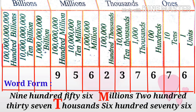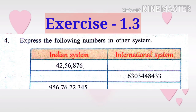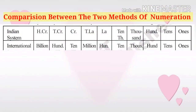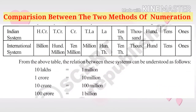Now take another problem from Exercise 1.3: express the following numbers in the other system. It is given in the Indian system: forty-two lakhs, fifty-six thousand, eight hundred and seventy-six. To represent it in the other system, first compare the two methods. From ones to ten thousands there is no change. Beyond that: lakhs equals hundred thousands, ten lakhs equals millions, crores equals ten millions, ten crores equals hundred millions, and hundred crores equals one billion.